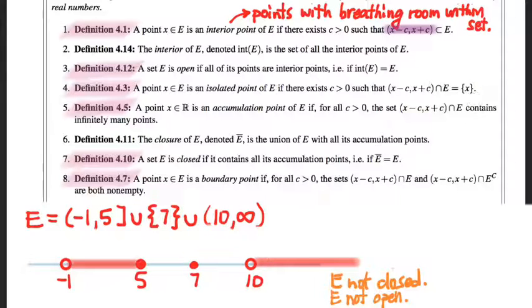So I'm isolated if I can reach out my arms and the only element of E that I hit is myself. What's an example of an isolated point in this set? I like the word isolated because it's really evocative, right? Seven is out there all on its own.